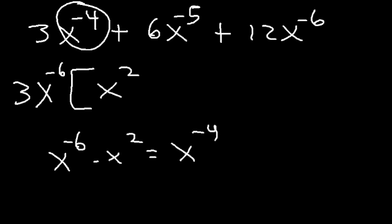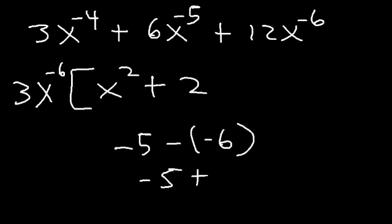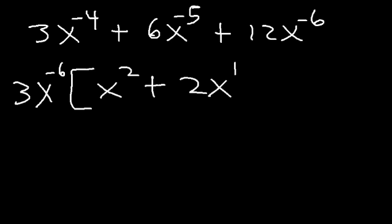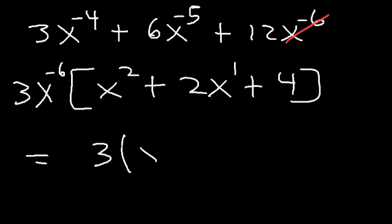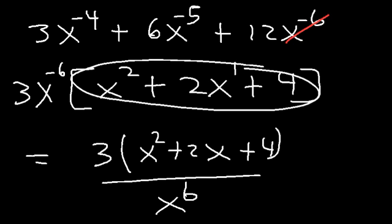For the second term: 6 divided by 3 is 2, and negative 5 minus negative 6 equals positive 1, so this is simply 2x. For the last term, we took out the entire x to the negative 6, and 12 divided by 3 is 4. The final answer is 3 times x squared plus 2x plus 4, divided by x to the sixth power. We cannot factor this trinomial further, so this is the answer.